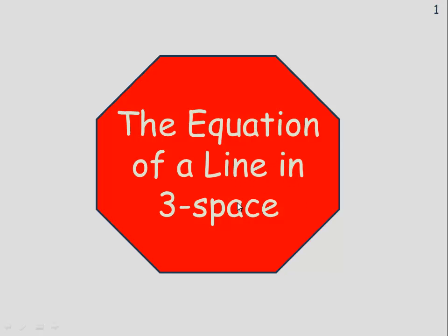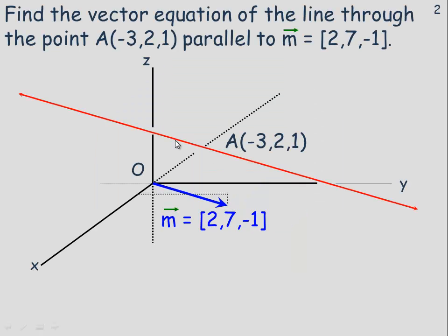In this lesson, we're going to take a look at the equation of a line in three-dimensional space. This is the line we're talking about — we're going to find its equation. The line contains the point negative 3, 2, 1, and is parallel to the vector 2, 7, negative 1, which provides a specific direction for the line. This is similar to slope in two-dimensional space, although there's no direct correspondence to slope in 3D — so we use vectors to represent directions.